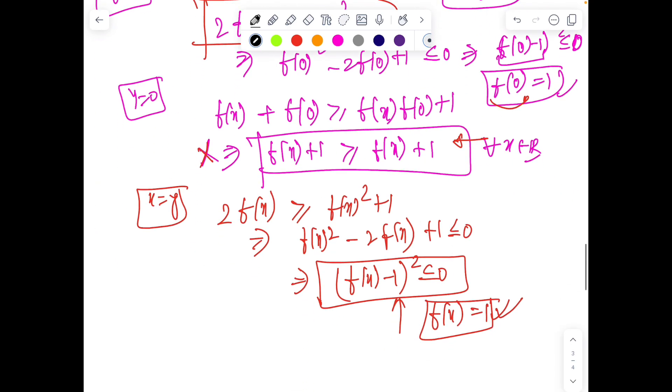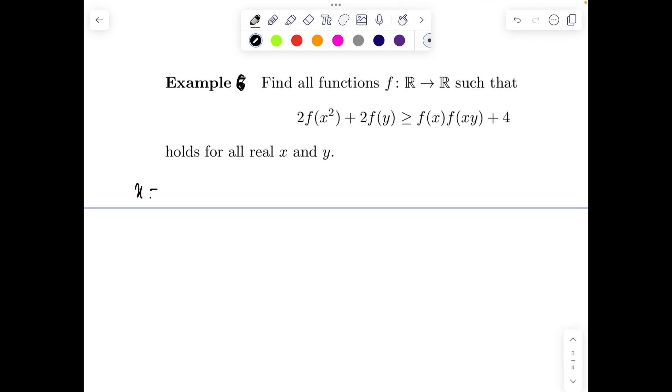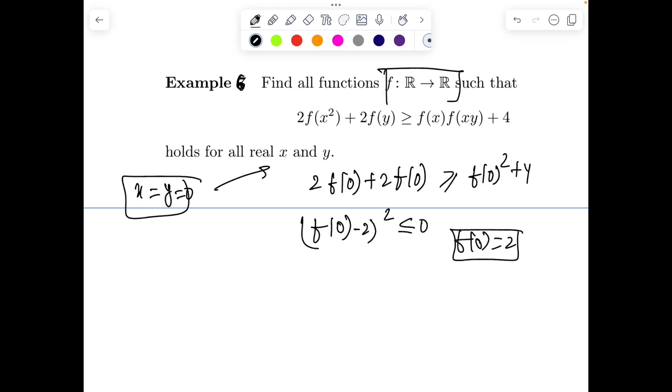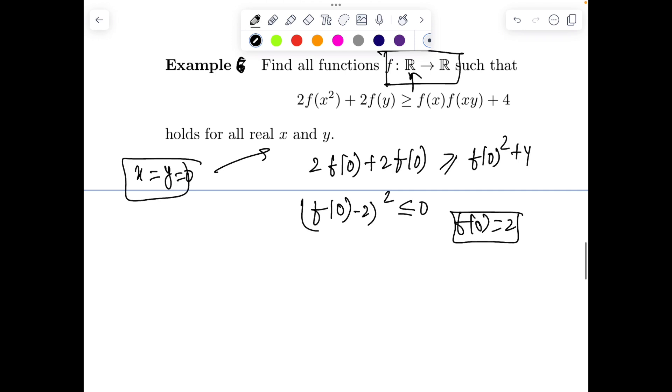A similar problem was asked in JEE Mains 2023. Let's try the last question. Put x = 0, y = 0 in the given expression. Then 2f(0) + 2f(0) = f(0)² + 4, giving (f(0) - 2)² ≤ 0. It's only possible if f(0) = 2. Now using f(0) = 2, put y = 0 to kill y.